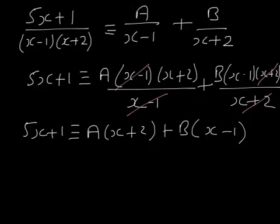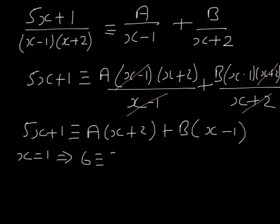This is an equivalence and it's true for whatever value of x. When x equals 1, I get 6 is equivalent to (1 plus 2), that's 3, so 3A. And then 1 minus 1 is 0 — that's why I chose x equals 1. By choosing x equals 1, the B term equals 0. So from here I can see that A equals 2.